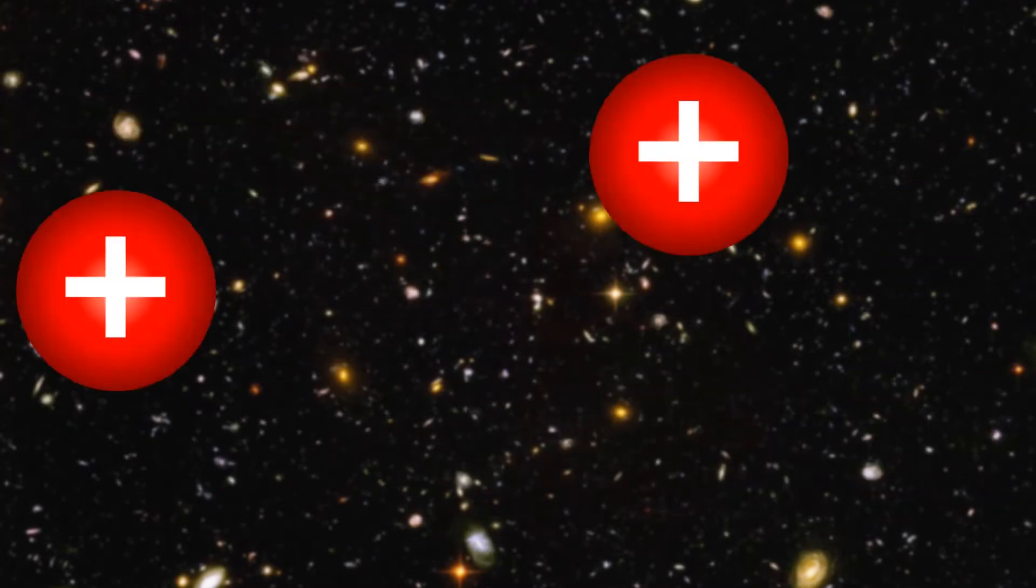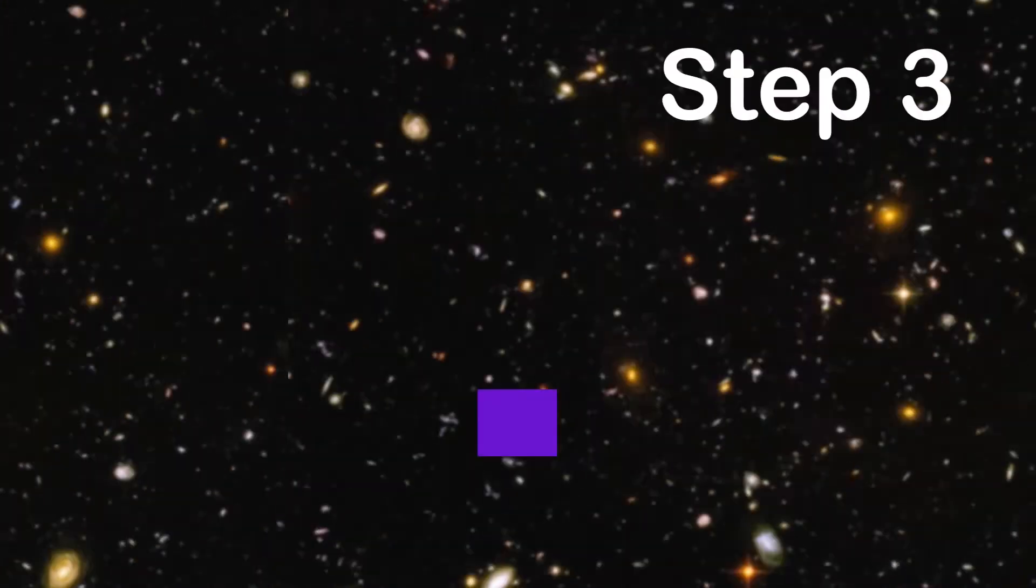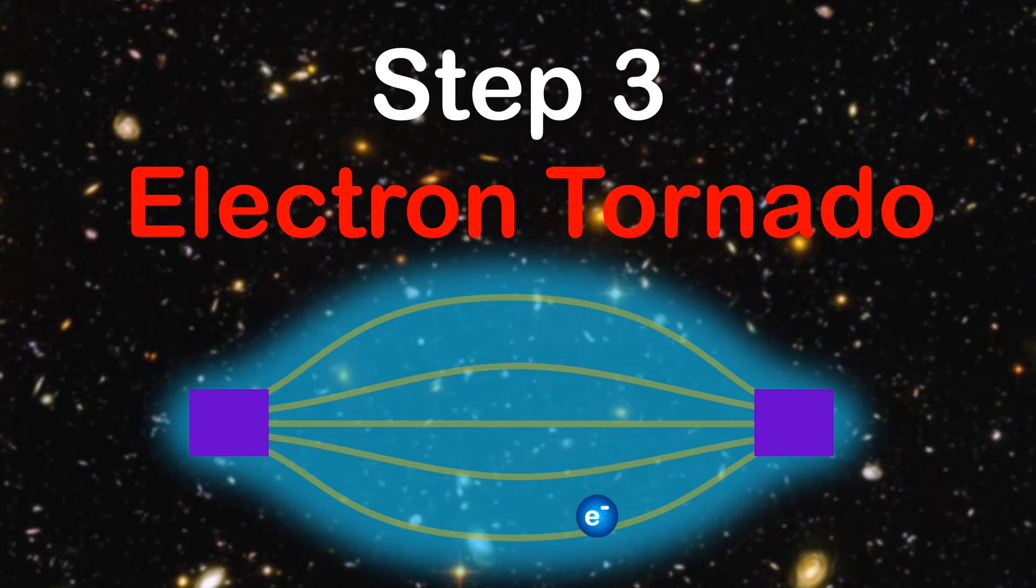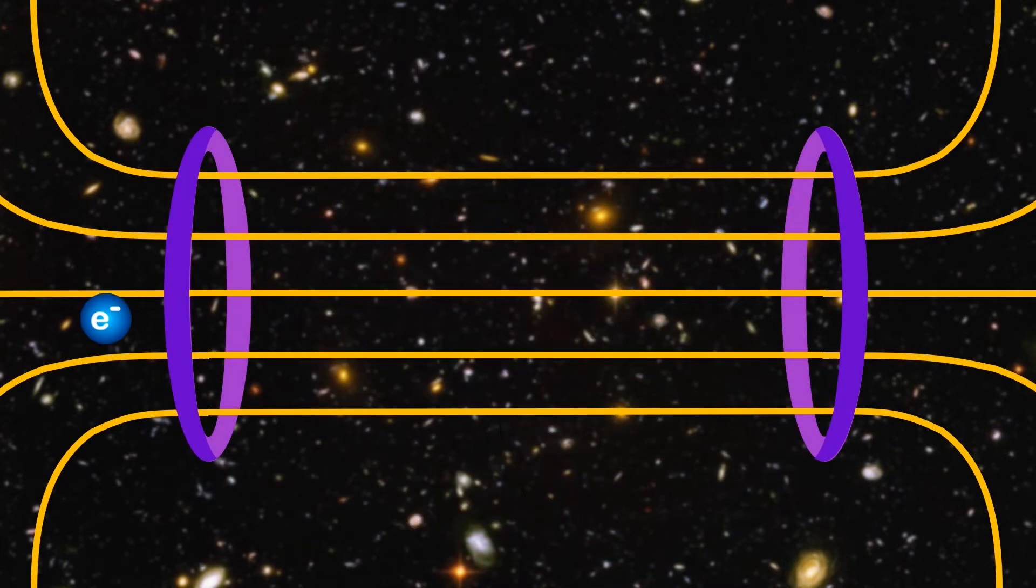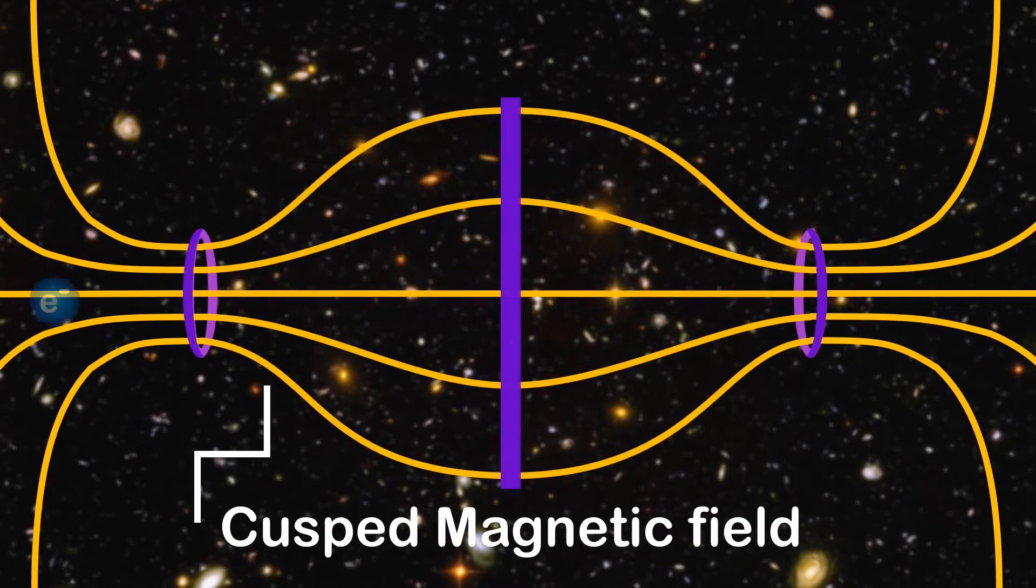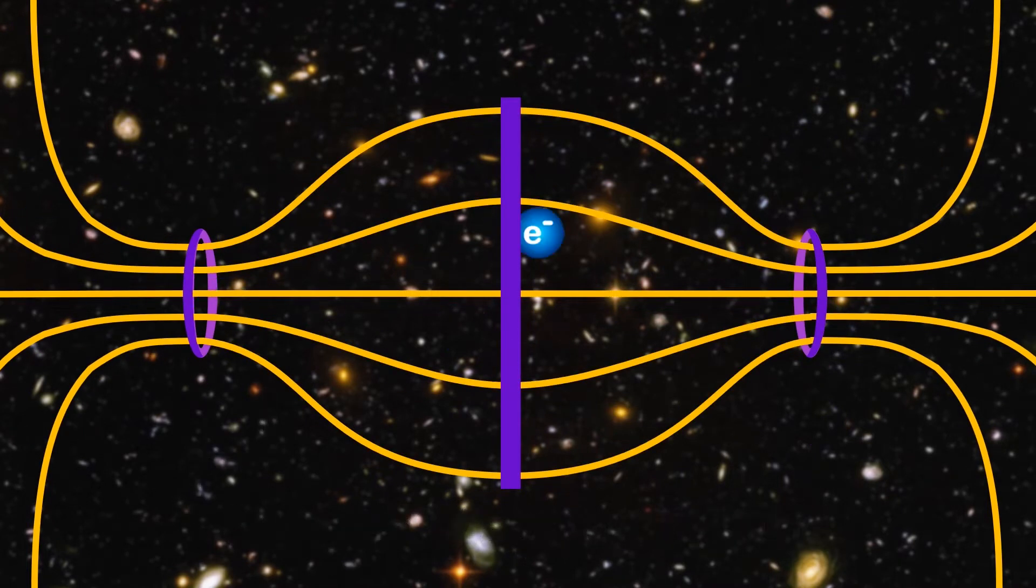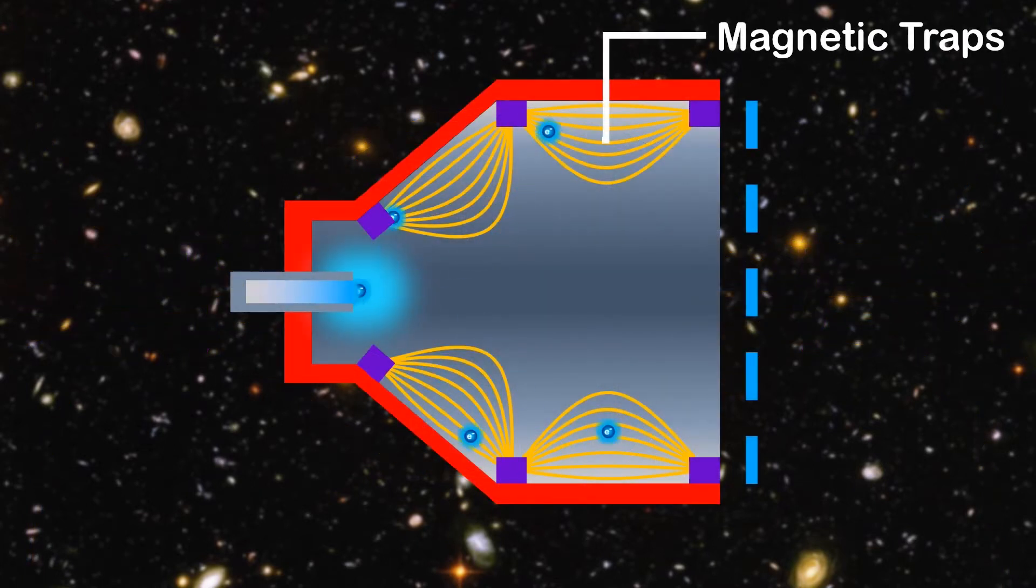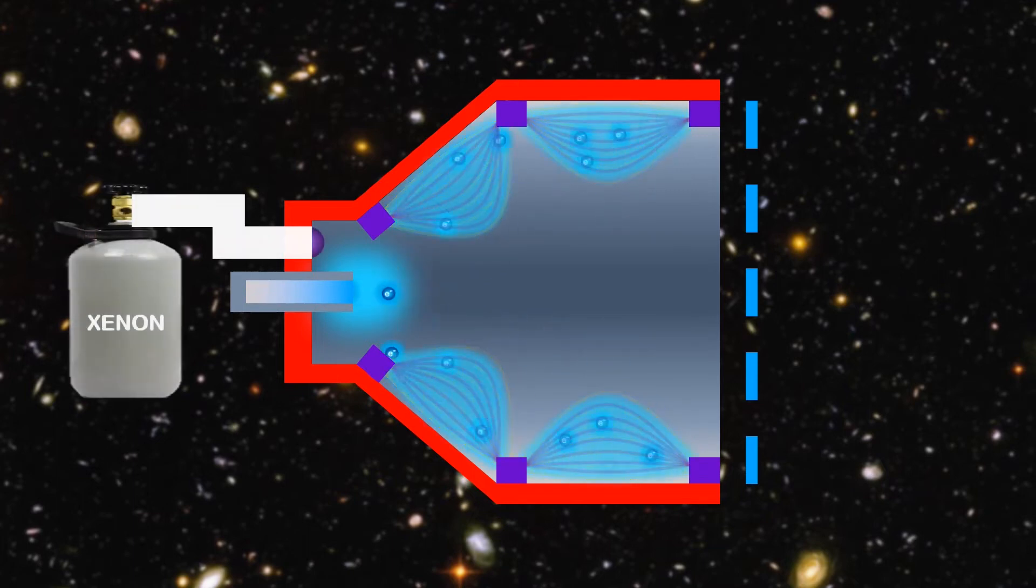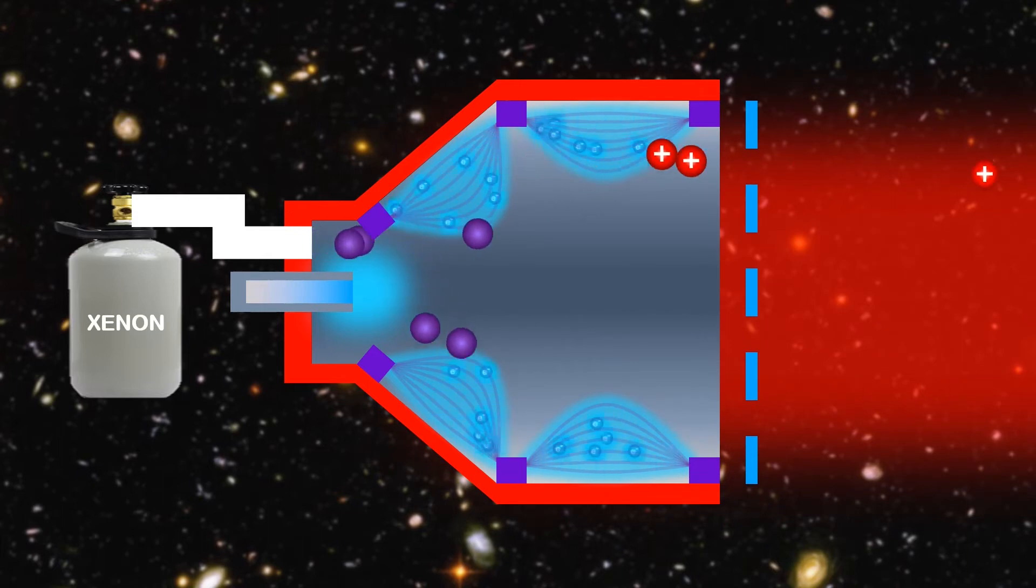But how can we increase the number of collisions, and hence the number of ions? Well, we create an electron tornado. Magnetic fields make electrons spin in a circle. But if you make the magnetic field stronger at both ends, you can trap the electrons in a never-ending spiral. But why is this useful? Well, by placing magnetic traps at the walls, we create mini-electron tornadoes. This greatly increases the number of collisions with xenon atoms, hence producing even more thrust.